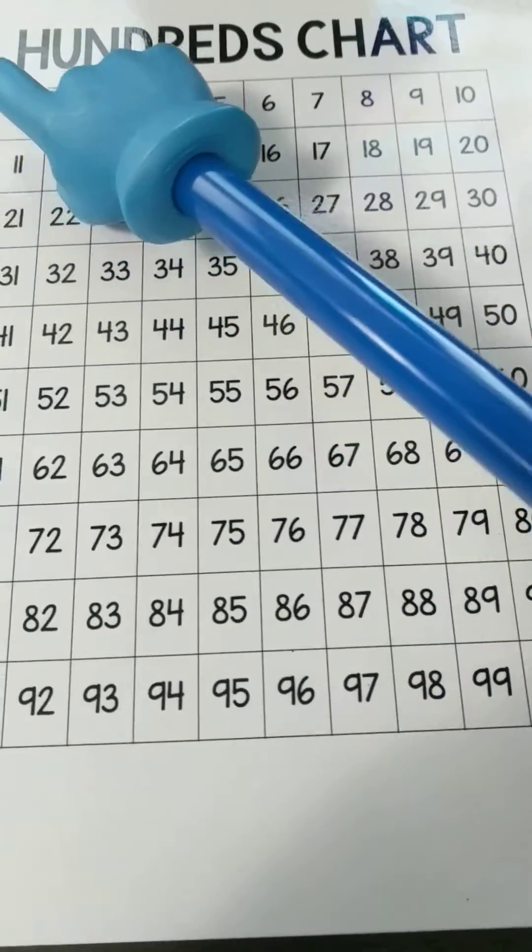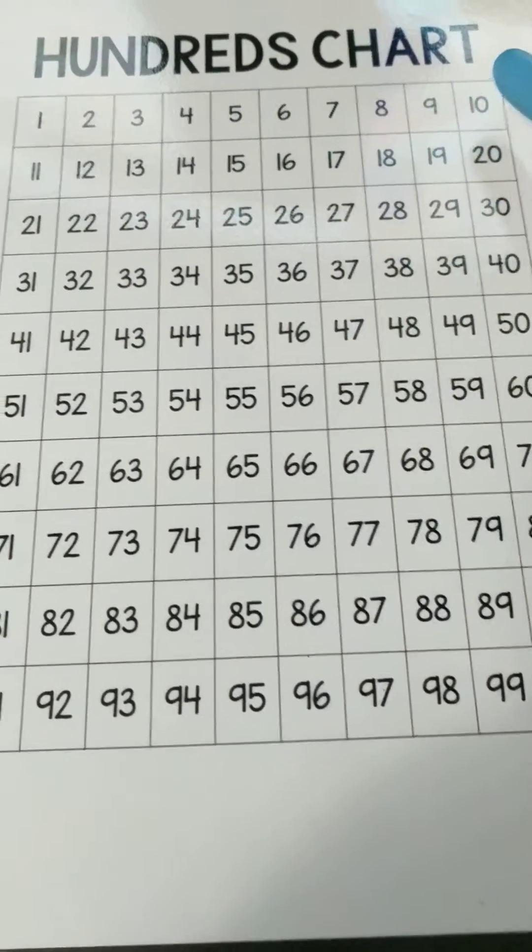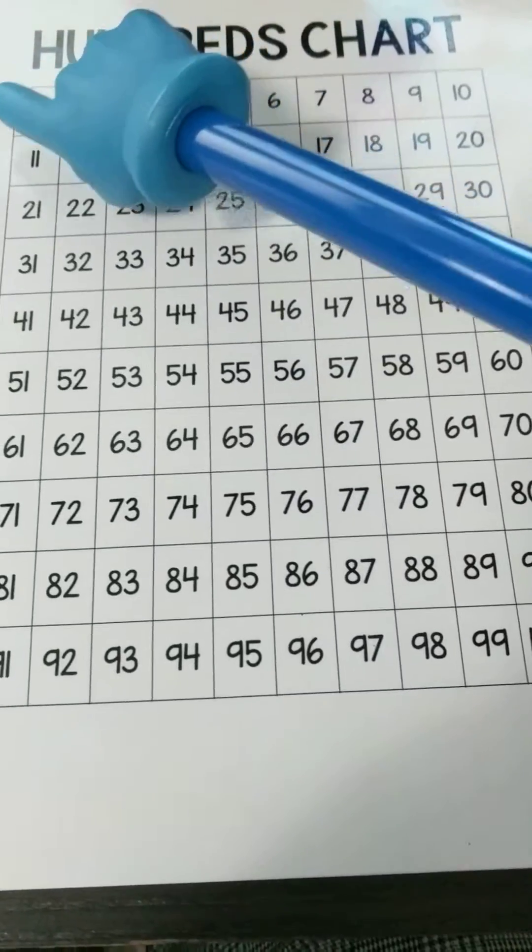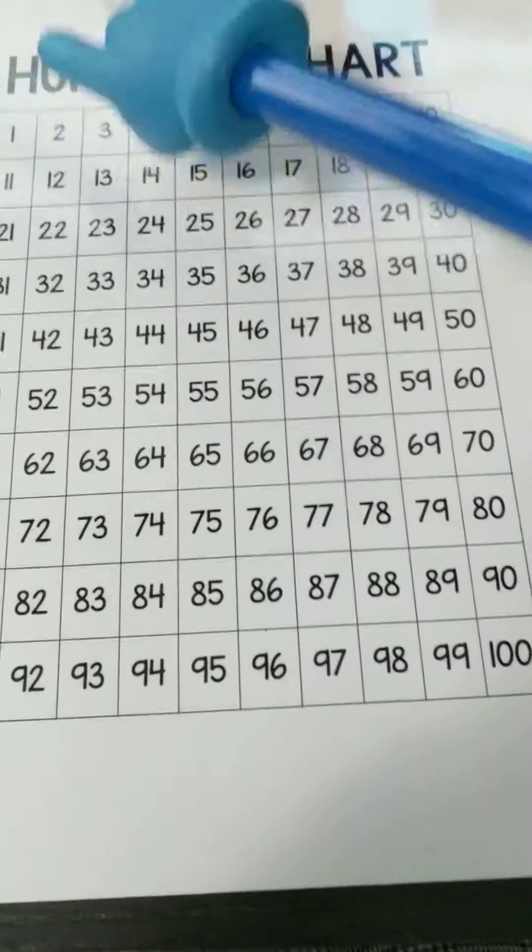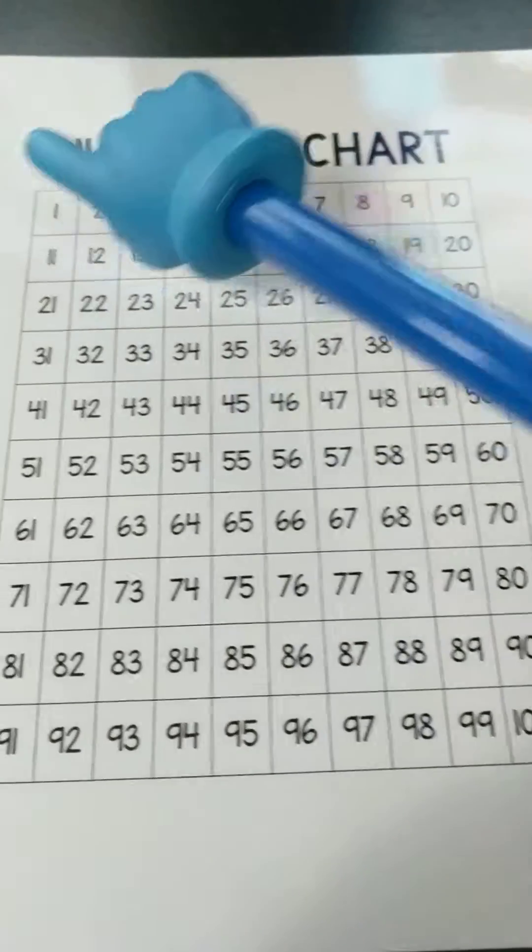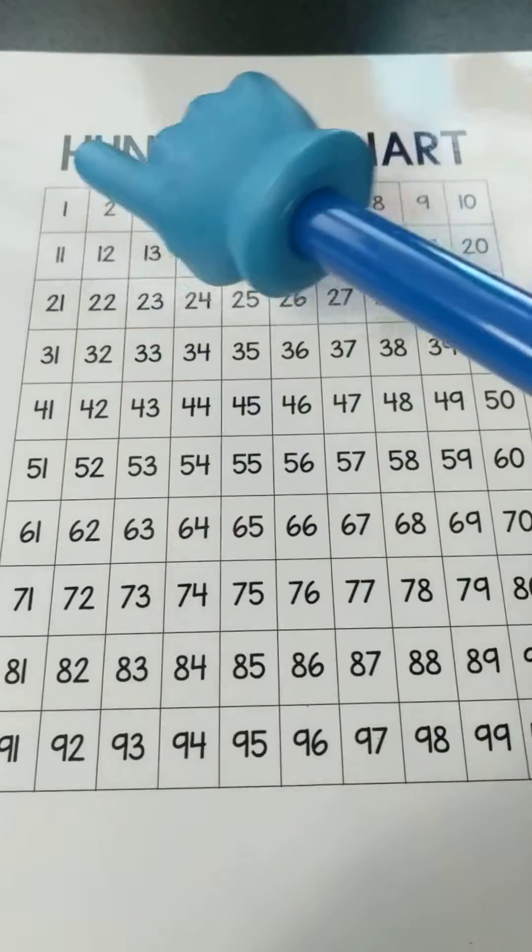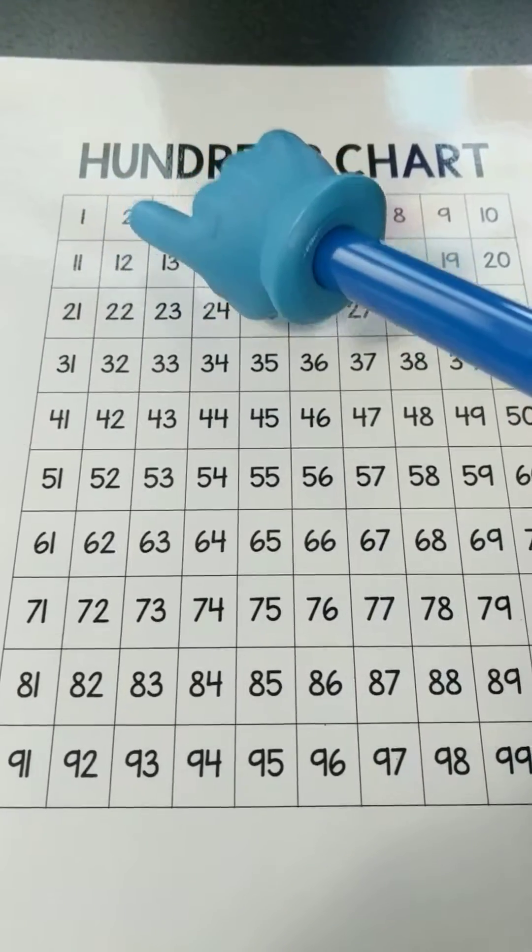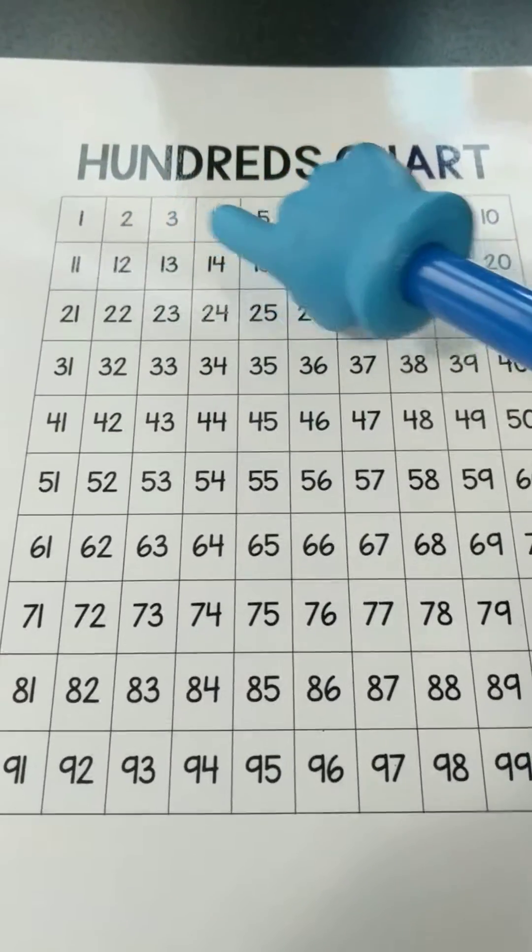If your child does not know all their numbers to 10, you can focus on just counting 1 to 10 this week. Maybe model it for them. You count once and then count together, and then have your child work on counting by themselves, 1, 2, 3 to 10.